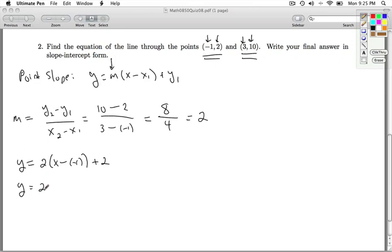x minus x1 plus y1. And I simplify 2 times x minus negative 1 is x plus 1 plus 2. I distribute that 2 through. 2 times x is 2x plus 2 times 1 is 2 plus 2. So, from my grand final answer, I get y equals 2x plus 4.